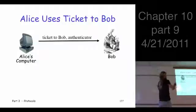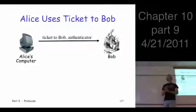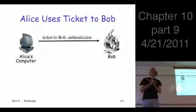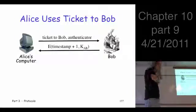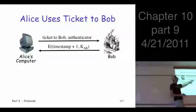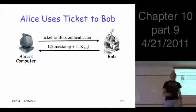The computer goes to Bob and presents the ticket along with an authenticator. What do you suppose this authenticator is? Just the same as before. Encrypted timestamp. And then Bob has to authenticate himself, so he's got to take the timestamp and encrypt it with the key K_B.